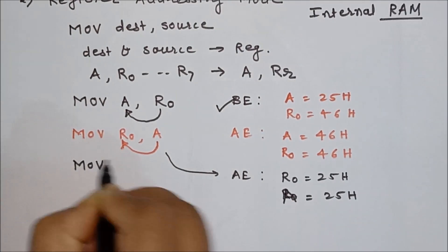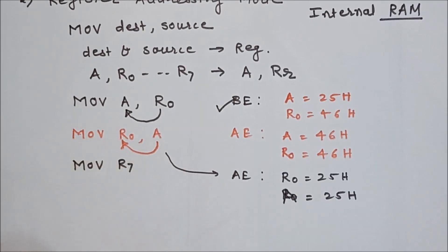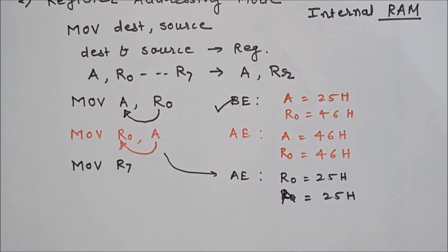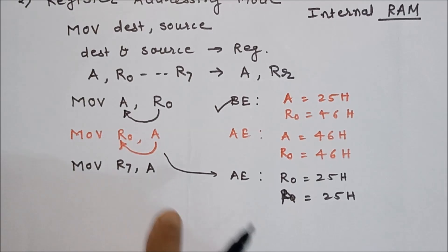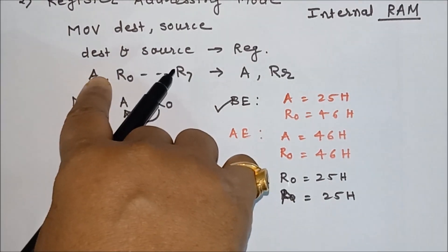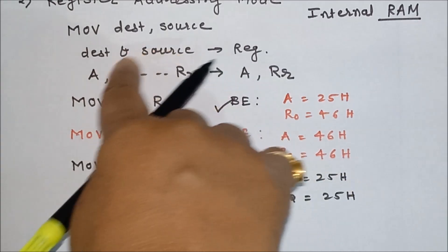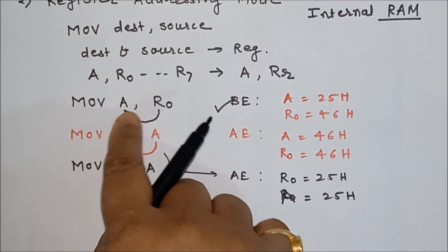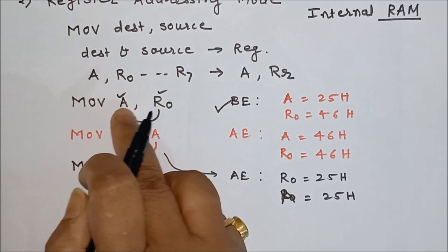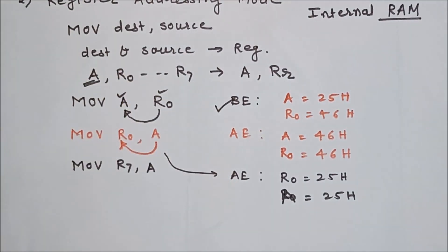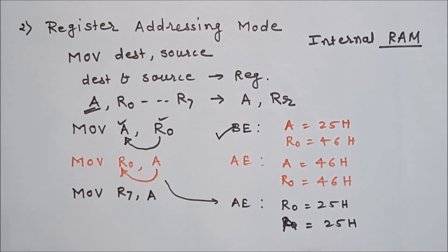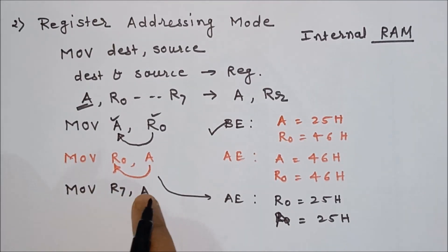You can use any register — for example R7 — along with the accumulator. The data transfer should be between the accumulator and any of these registers. That means one of the operands must be the accumulator. This is register addressing mode, which is used to move data from one register to another.